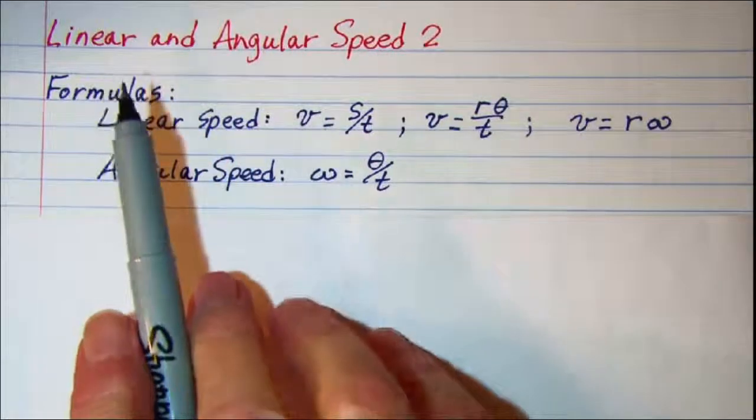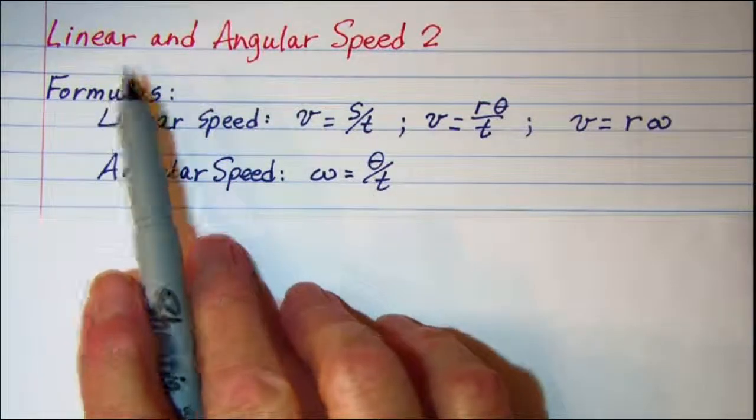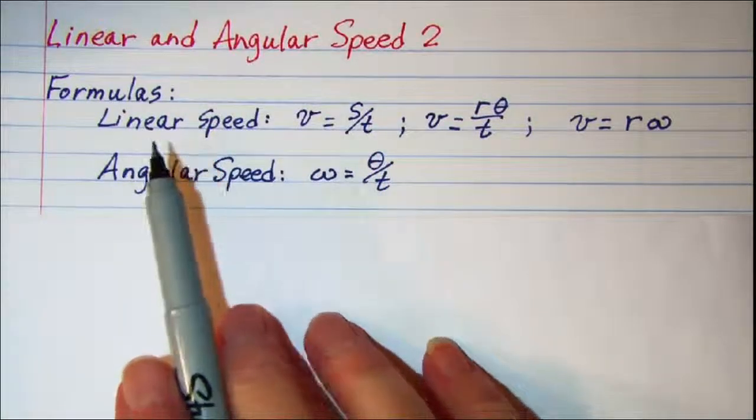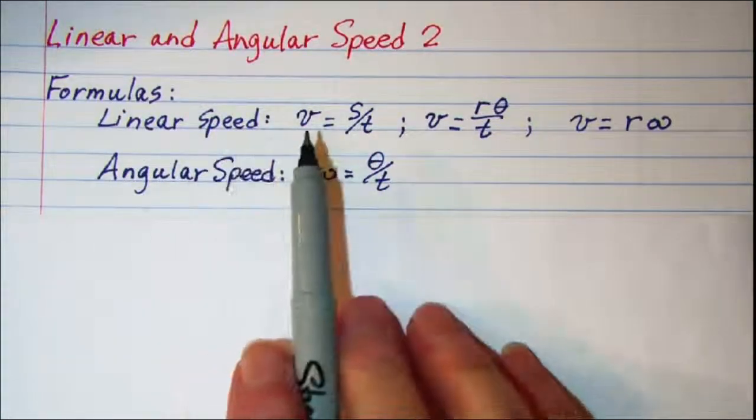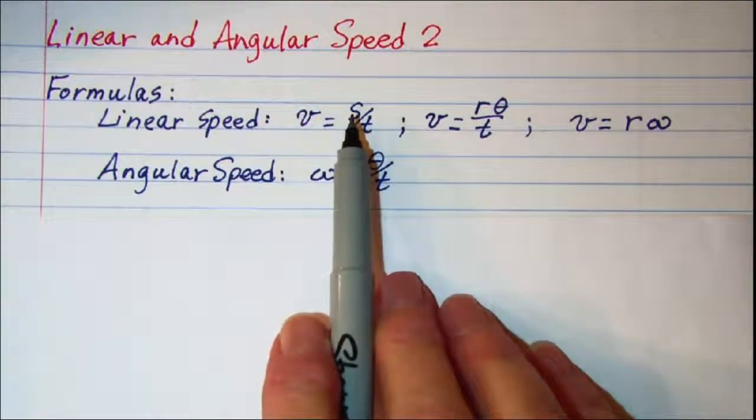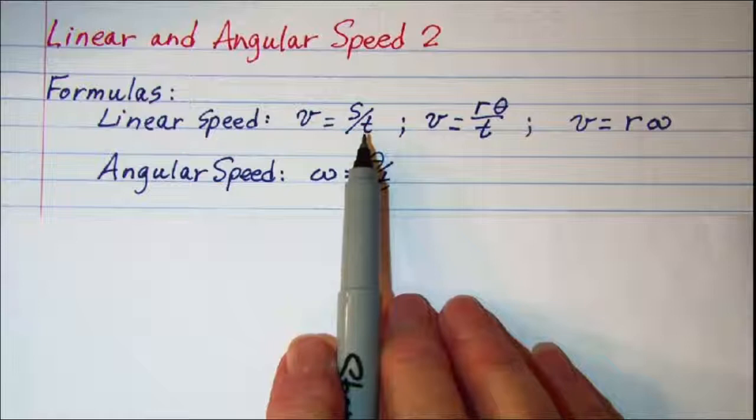In this video we'll be looking at a problem involving linear and angular speed. The formulas that we've learned so far for linear speed: velocity is equal to the distance along the arc of a circle per unit of time.